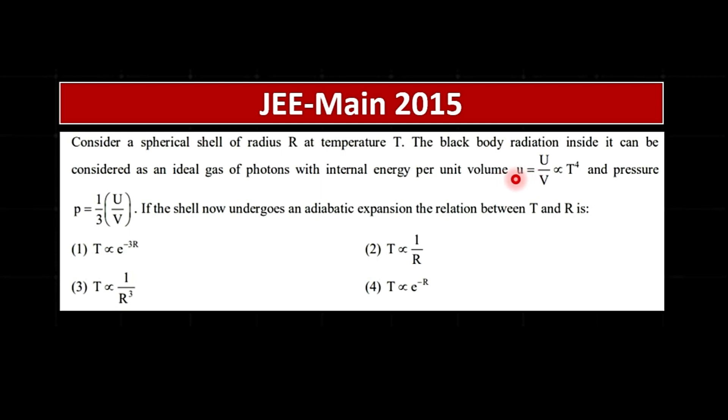Per unit volume, small u equals capital U by capital V, proportional to T to the power 4, and pressure P equals 1 by 3 times capital U by V. If the shell now undergoes an adiabatic expansion, find the relationship between T and R.